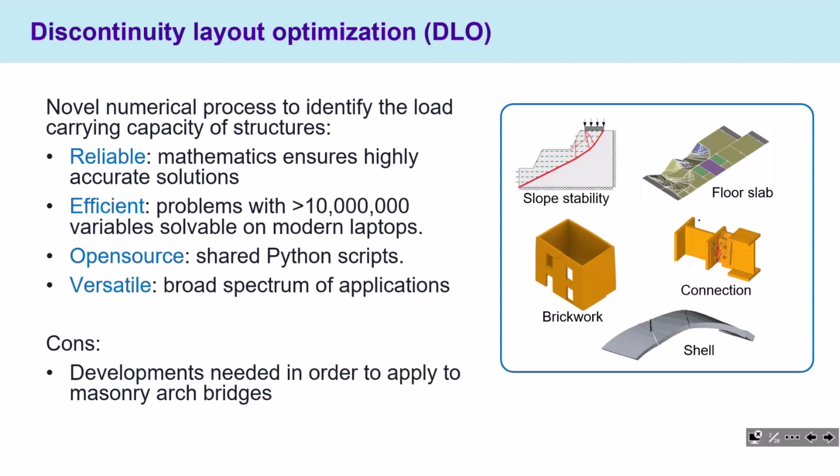The third category is the discontinuity layout optimization, a novel numerical process to identify the load-carrying capacity of various structures. This method is very reliable because we use rigorous mathematics, ensuring highly accurate and efficient solutions. For example, in our DLO applications we can solve problems with more than 10 million variables on modern laptops. The method is also open source and we have recently published Python scripts for everyone.